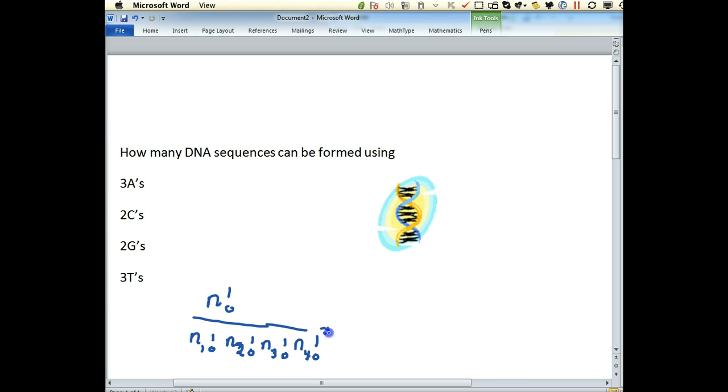On the bottom of this fraction, we have our distinct items. We have three letter A's factorialized, two letter C's factorialized, two G's, and each distinct item, or each distinct base in this case, is one of the things that I could repeat.